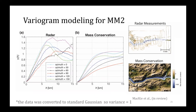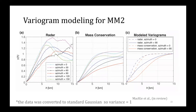So now we calculate the variograms. These are empirical variograms for the radar and mass conservation input parameters calculated along different directions. We can see that the radar has a higher variance than the mass conservation because it is rougher. We can also see some strong anisotropy because the topography is oriented along the ice flow direction. We then fit variogram models to the empirical variograms according to the Markov model formulations, using the Stanford geostatistical modeling software, which we also use to implement the simulations.